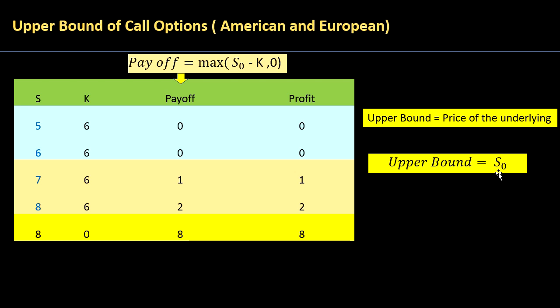This value, let's assume this is $8.50, will again come to $8.00 when you calculate the present value. And that's what we are saying: the upper bound of a call option, whether it's a European option or an American option, is the spot price of your underlying.